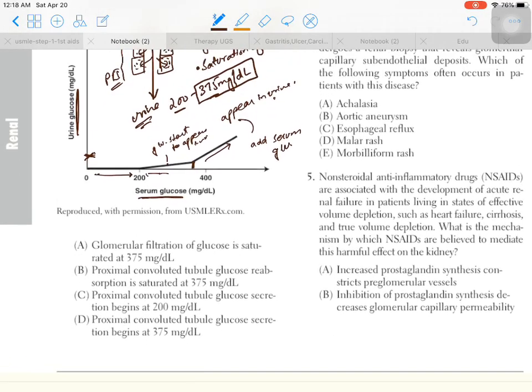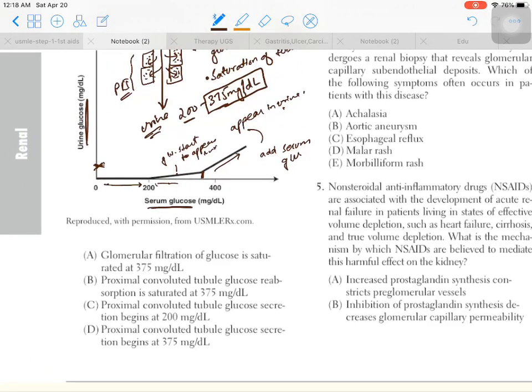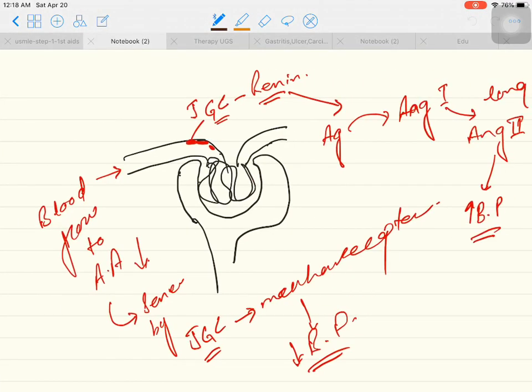Further addition in serum glucose directly appears in the urine, not absorbed by proximal convoluted tubule cells. The answer: glomerular filtration of glucose is saturated? No, glomerular filtration always filters glucose at any level. The best option is that proximal convoluted tubule glucose reabsorption is saturated - yes, this is our best option.